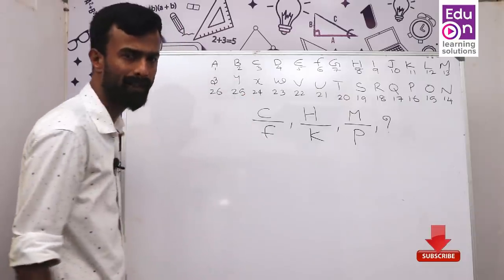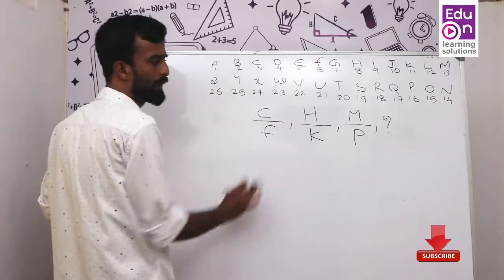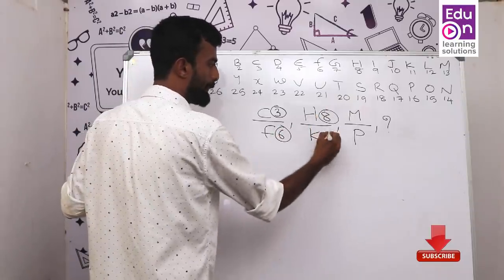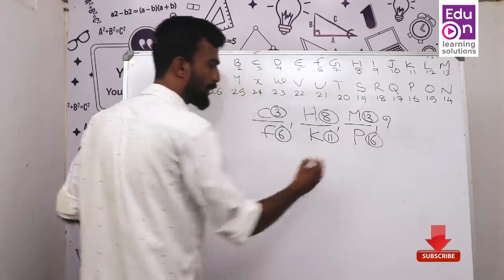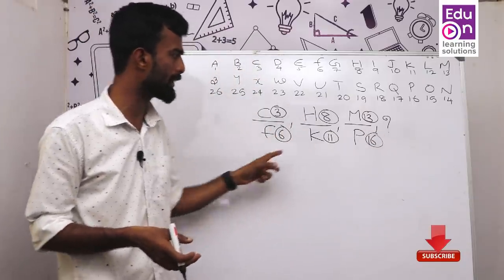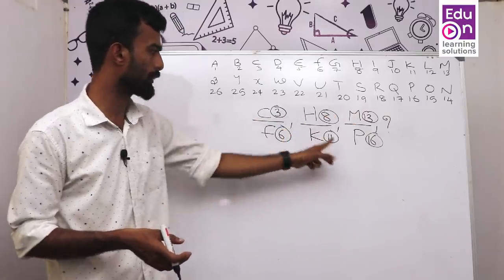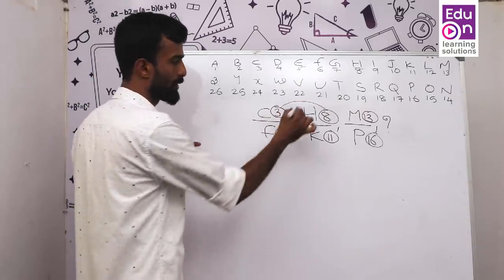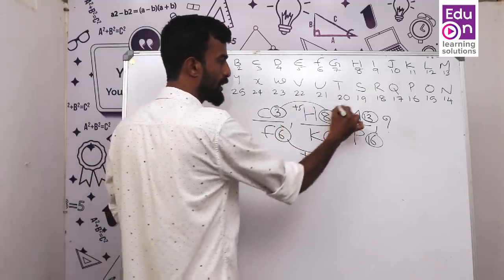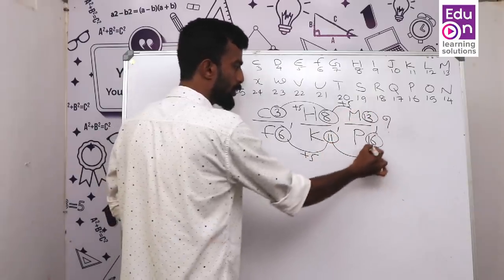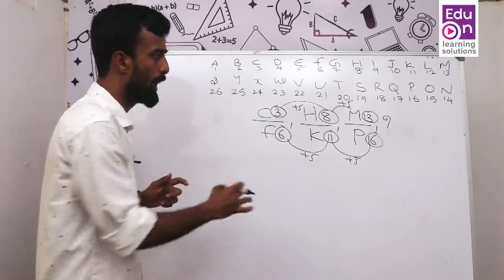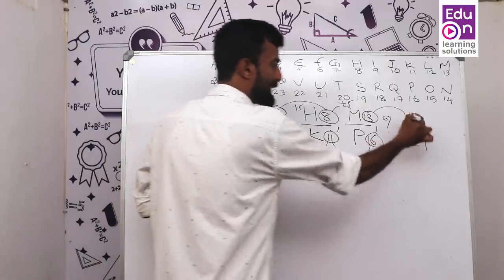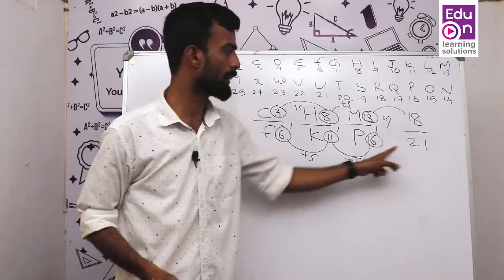The logic is: C=3, F=6, H=8, K=11, M=13, P=16. The differences alternate between 3 and 2, giving pairs with gaps of 3 within each pair and 2 between pairs.